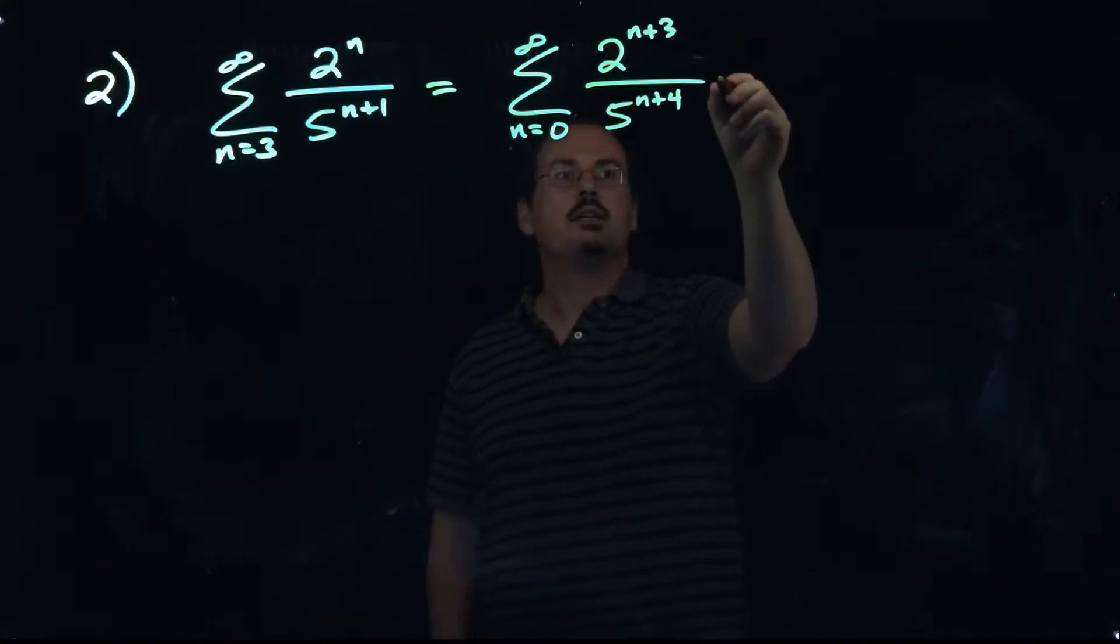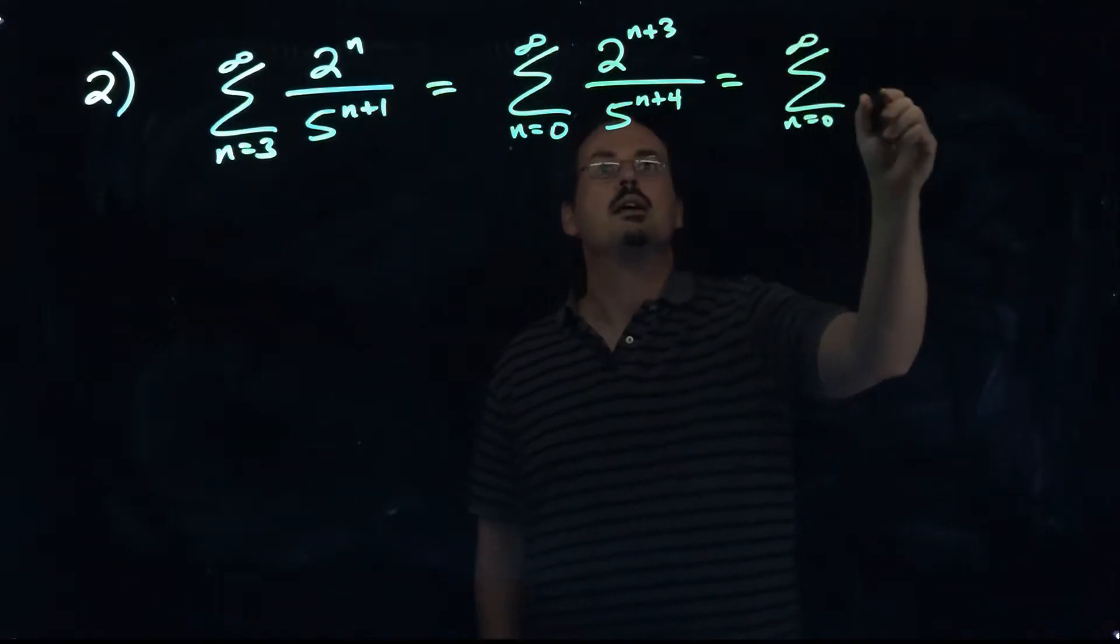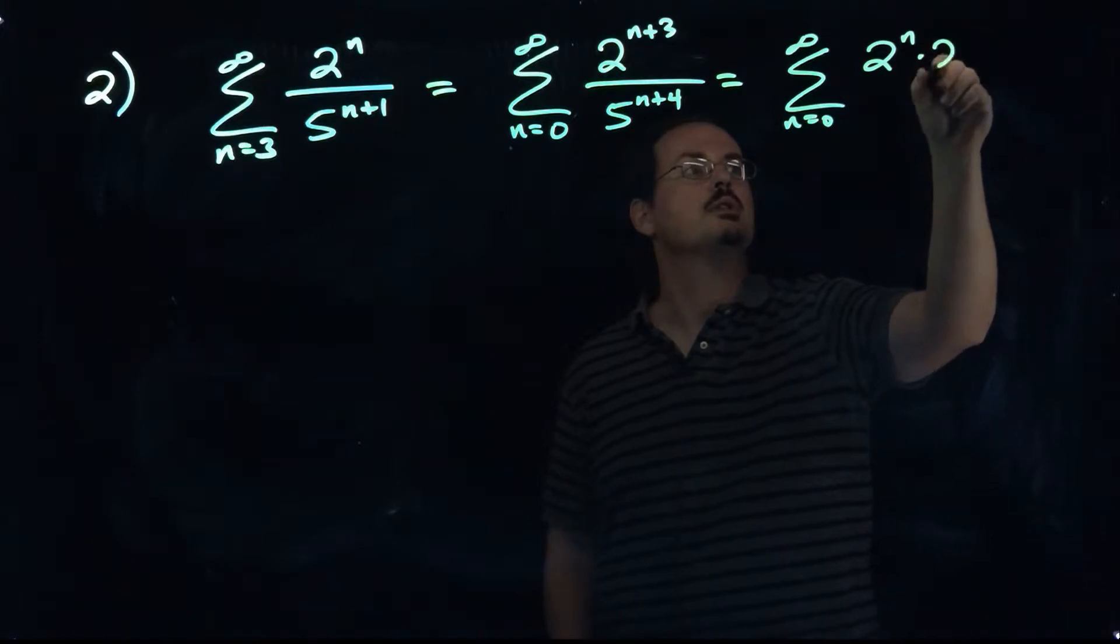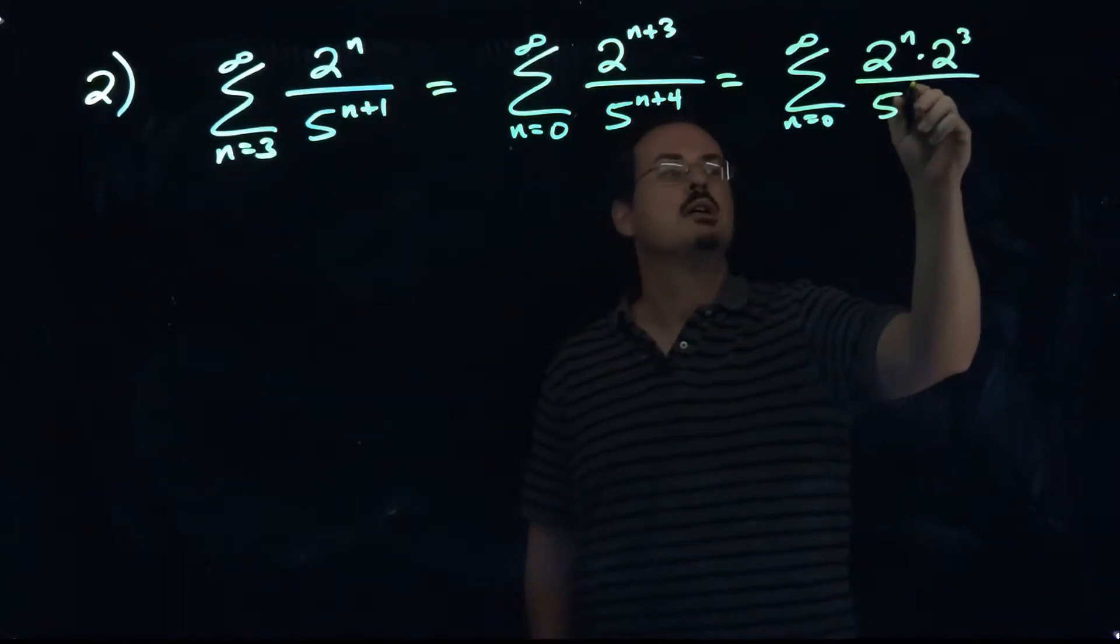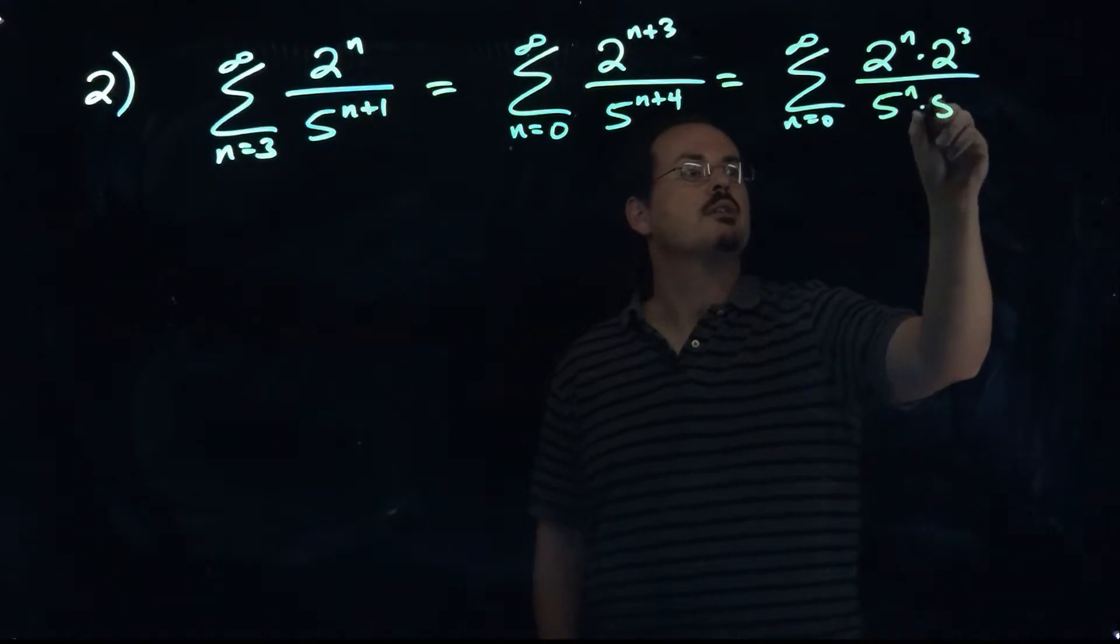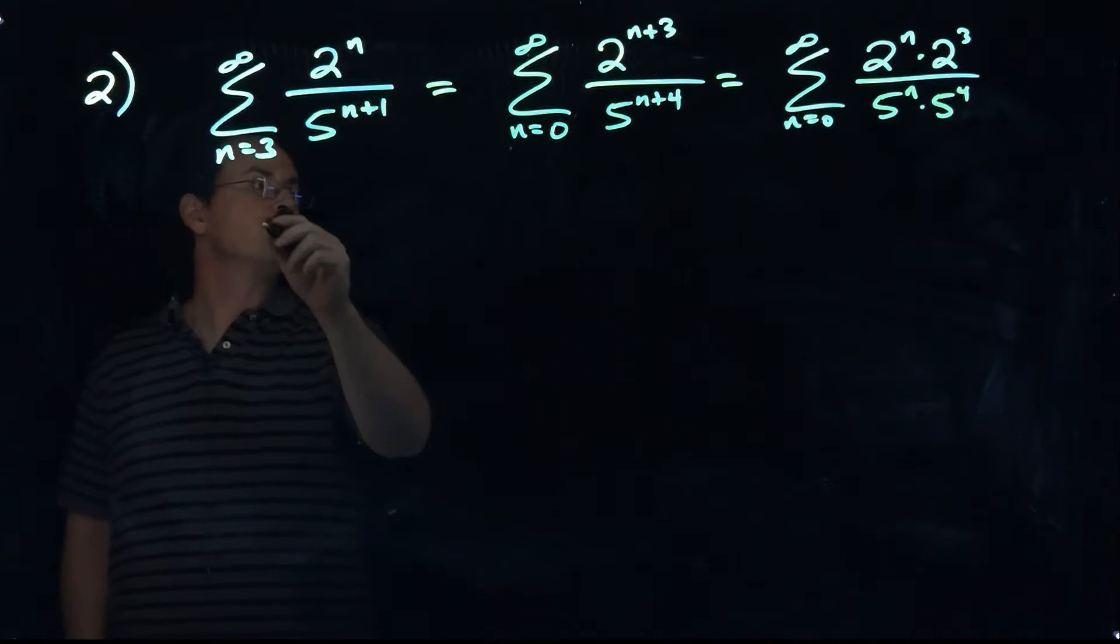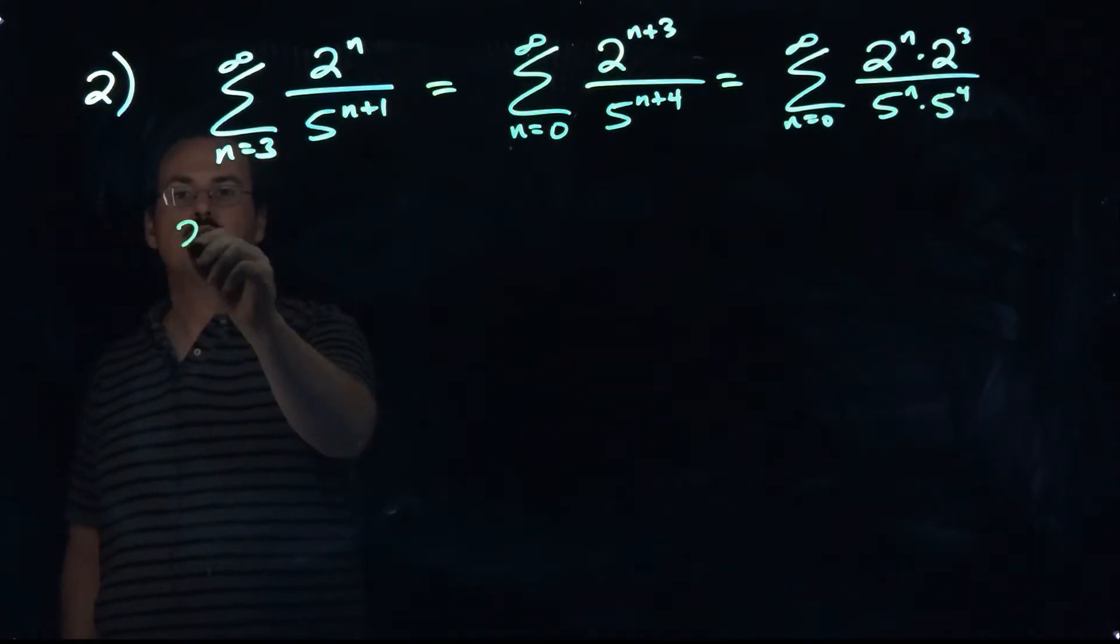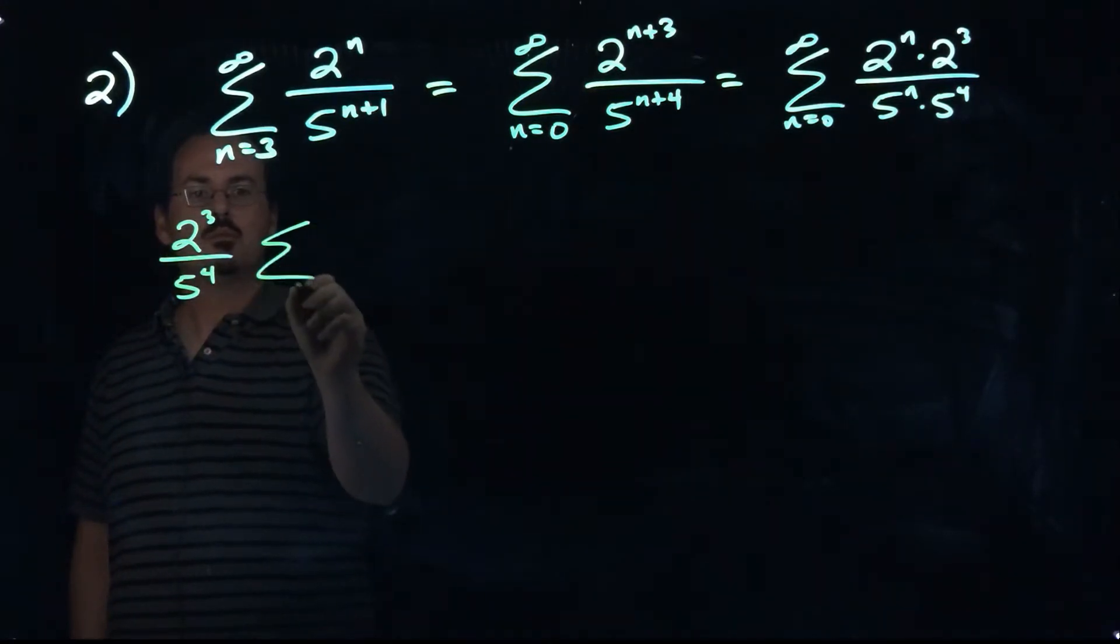And then I can use our properties of exponents to write this as two to the power of n times two to the third power over five to the power of n times five to the fourth power. And then we can move the constants out in front, so we'll have two to the third over five to the fourth multiplied by the sum.